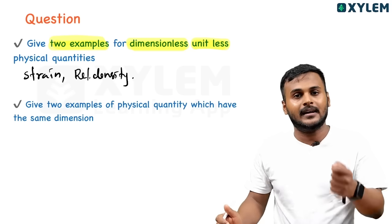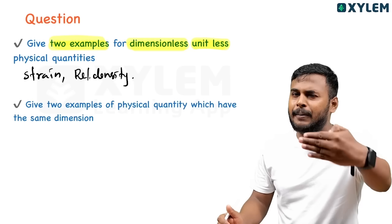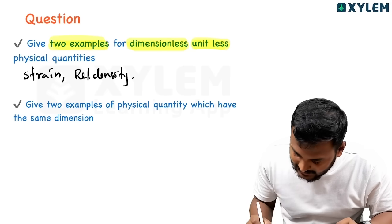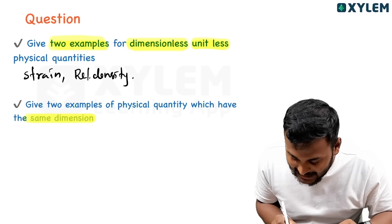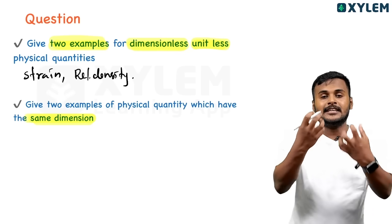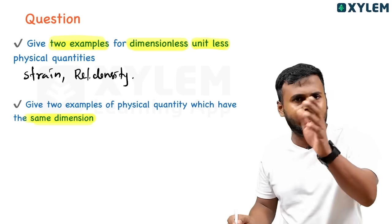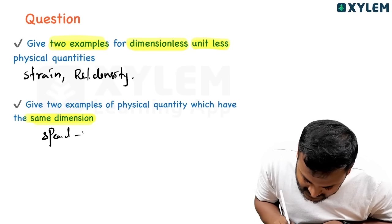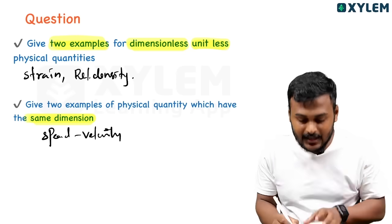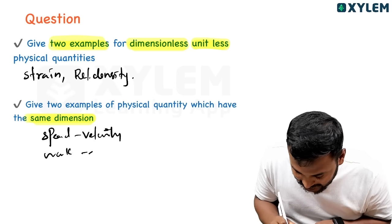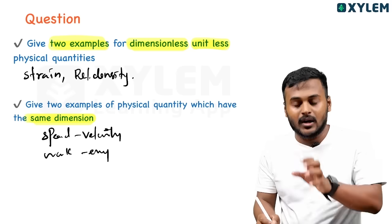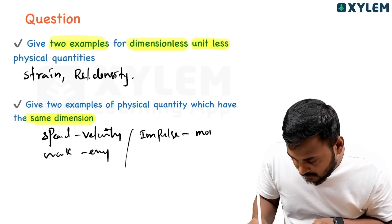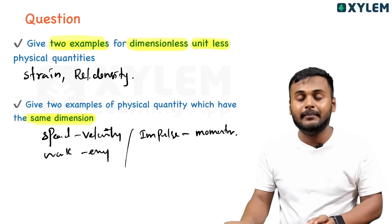Give two examples of physical quantities having the same dimension. Speed and velocity have the same dimension. Work and energy have the same dimension. Impulse and momentum have the same dimensions.